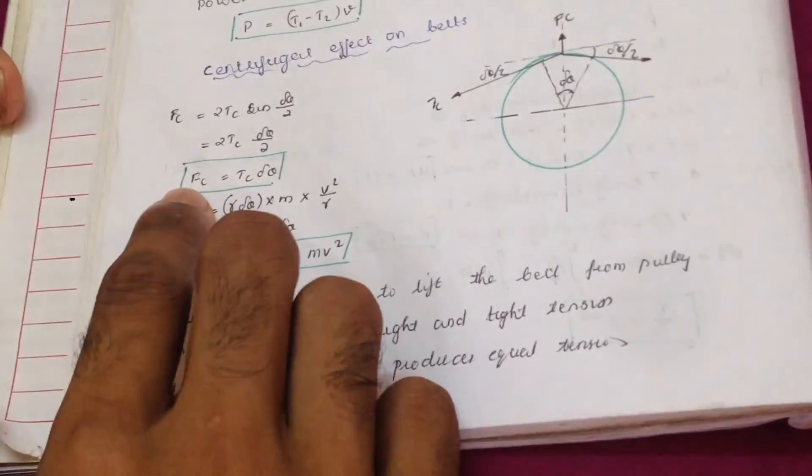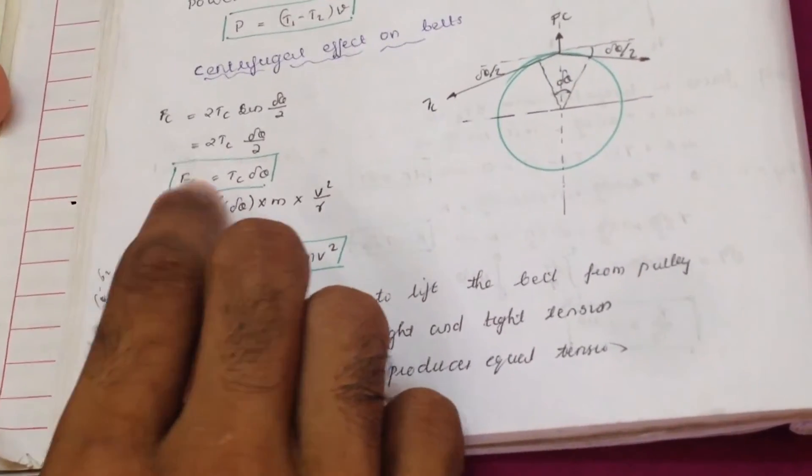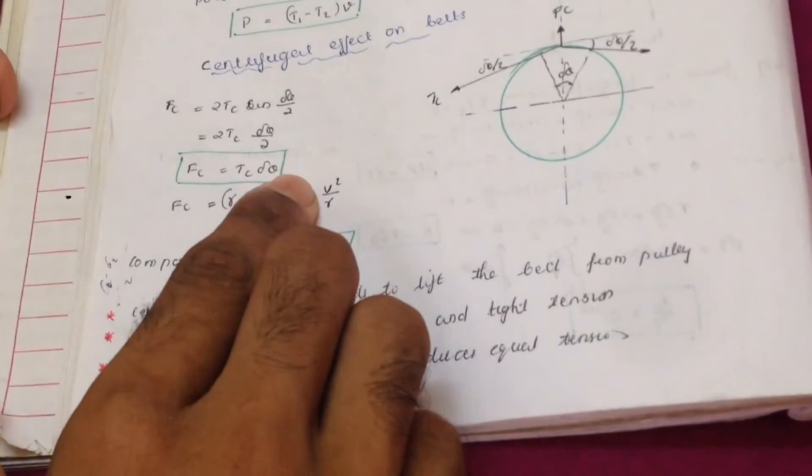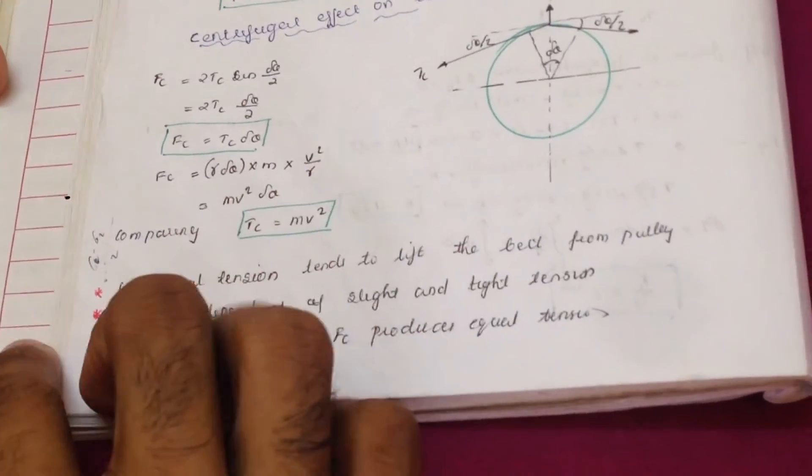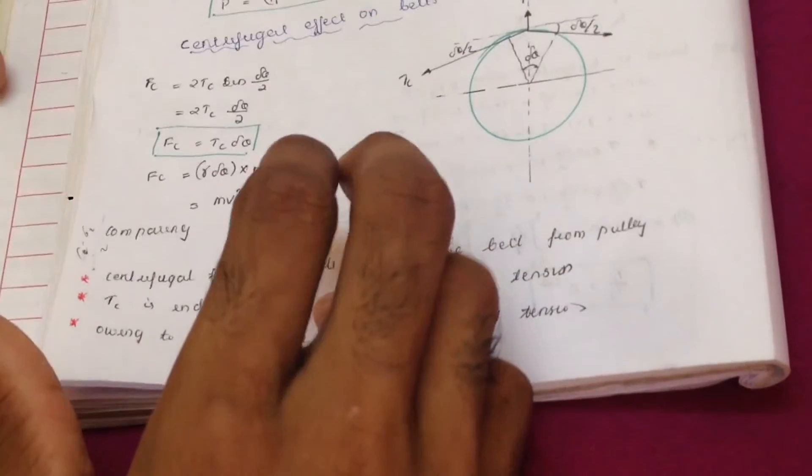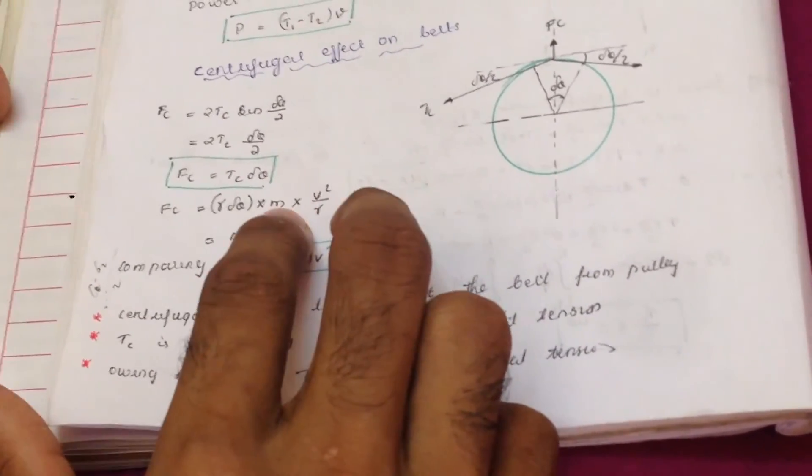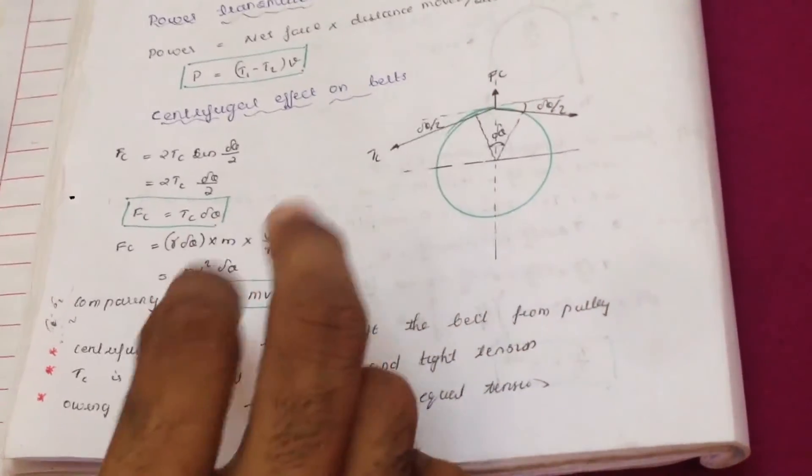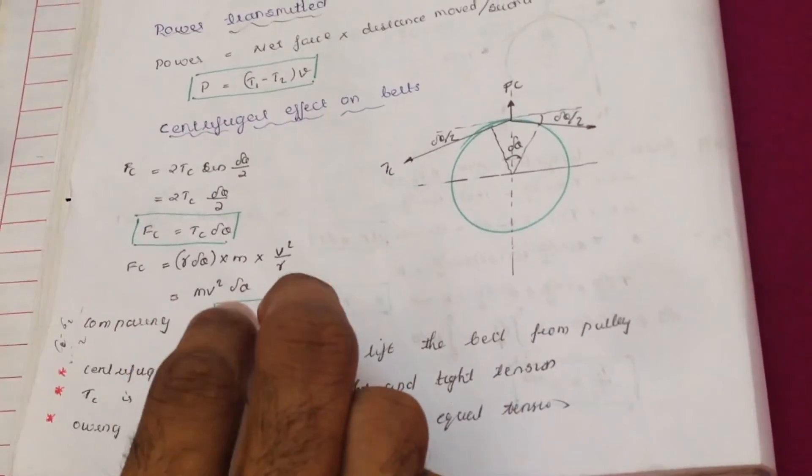From here we will get that centrifugal force fc is equal to tc delta theta and we also know that fc is equal to r delta theta into mv square by r where m is the mass of the belt. So from here fc is equal to mv square dtheta.